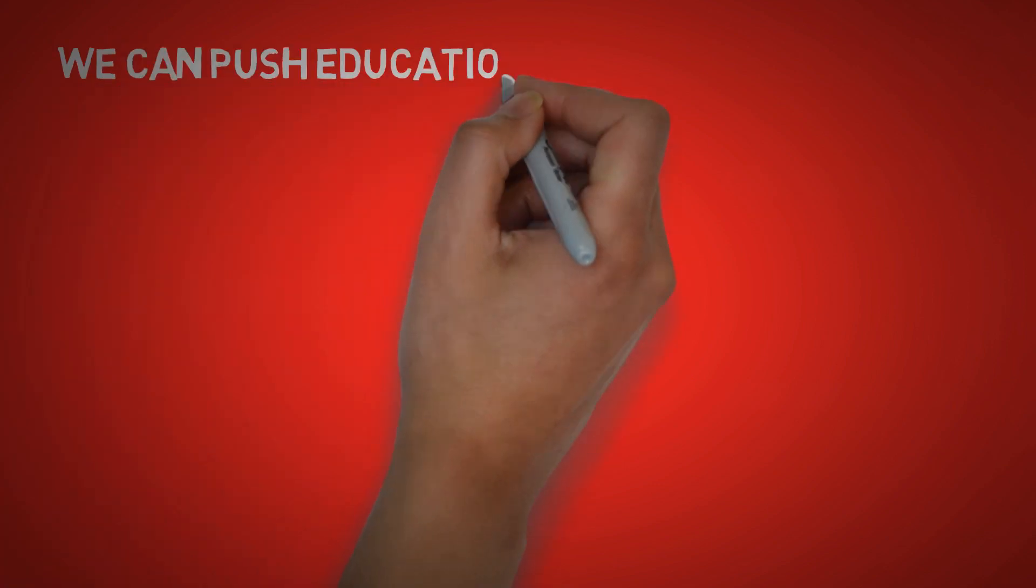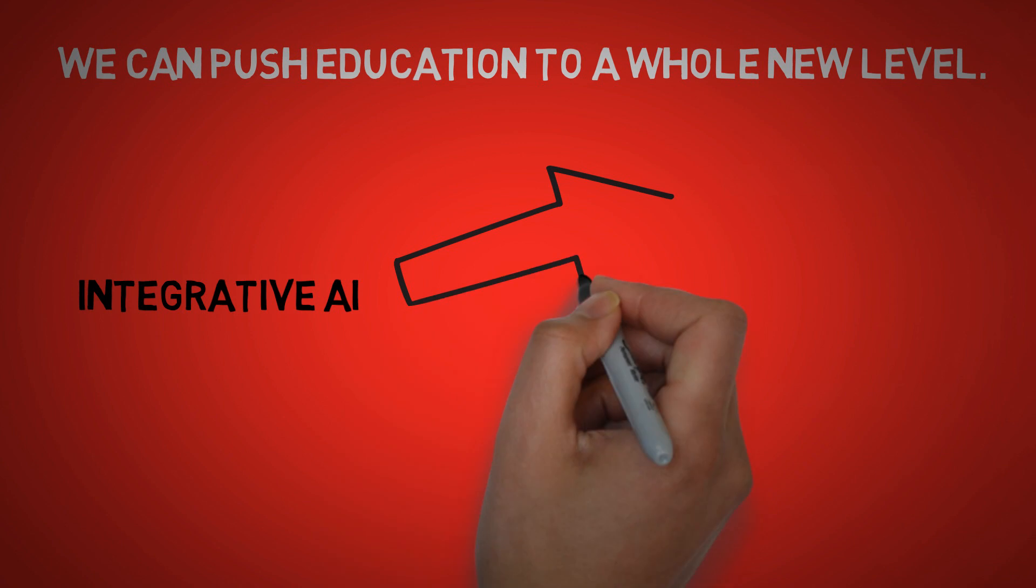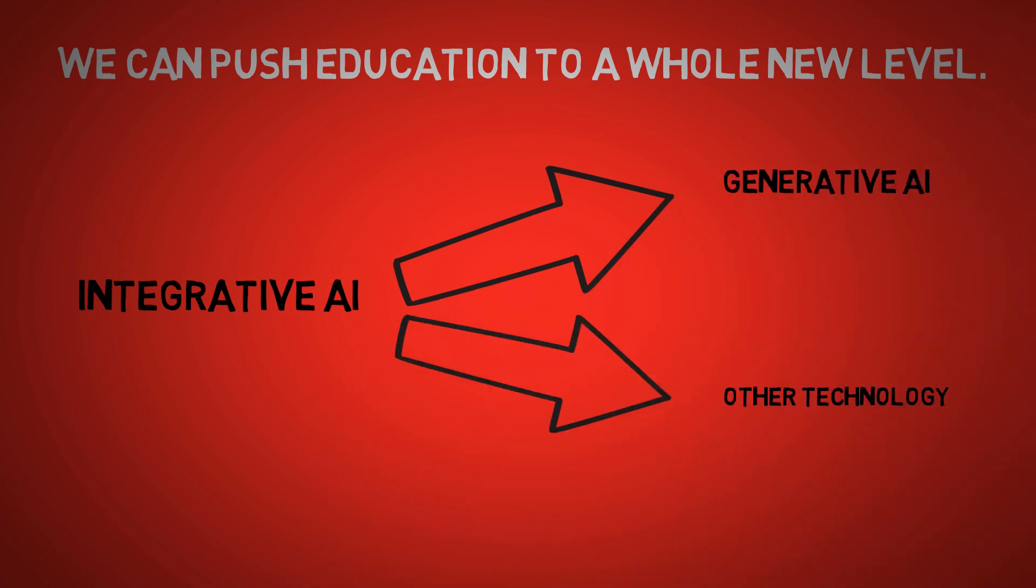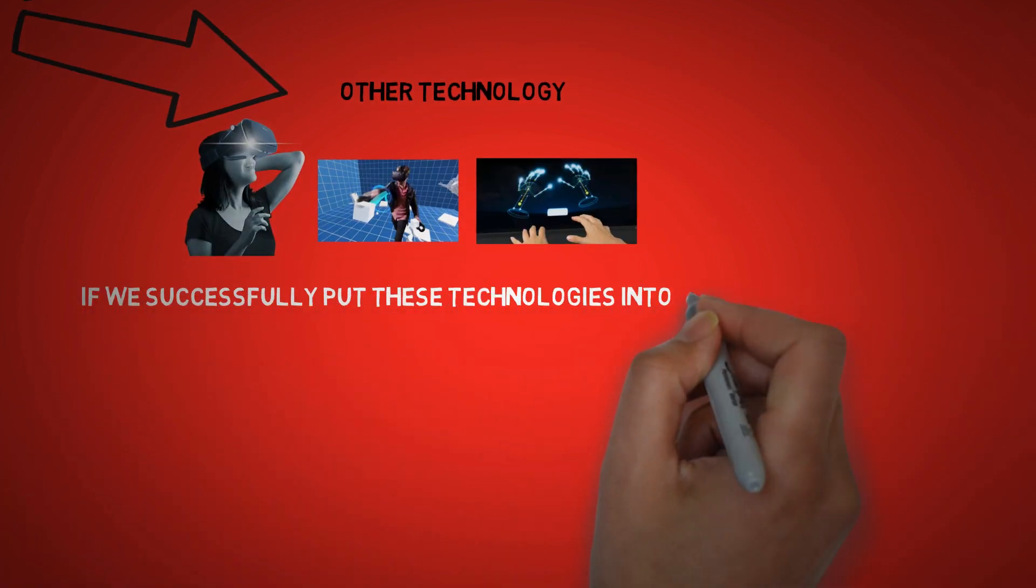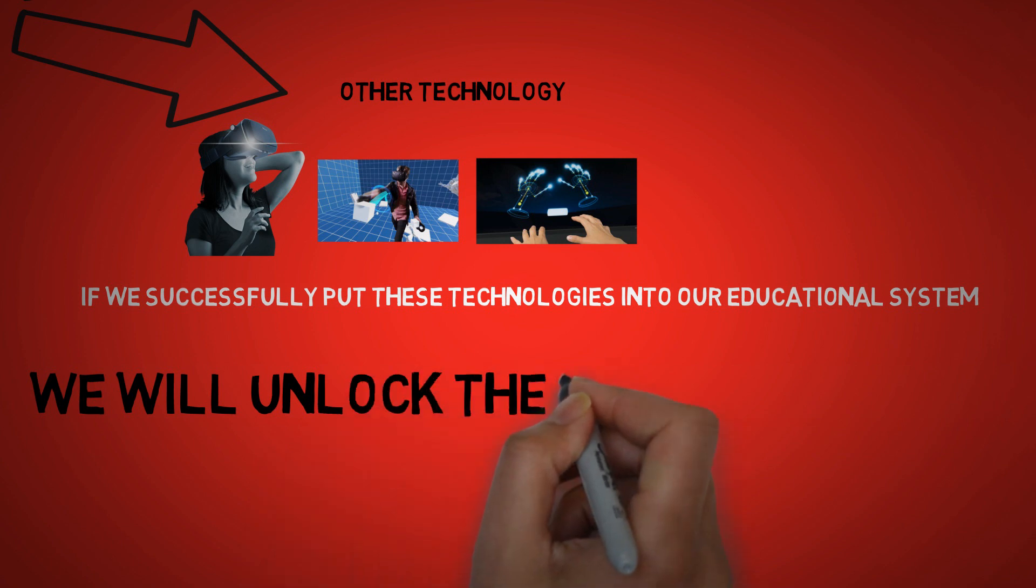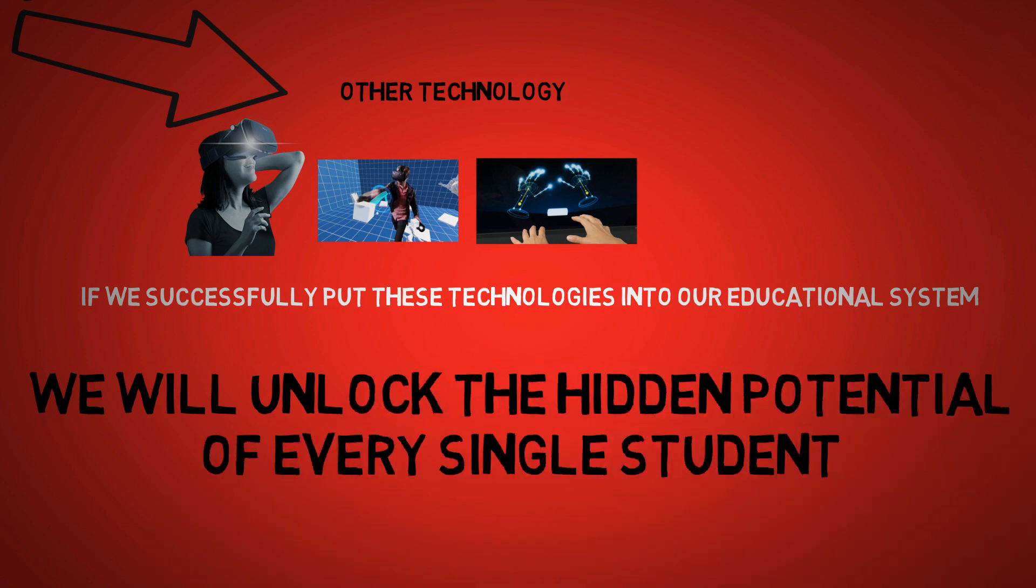We can push education to a whole new level. At the risk of oversimplifying, integrative AI is the mix of generative AI with other technologies such as virtual reality, simulated world or gesture recognition. If we successfully put these technologies into our educational system, then we will unlock the hidden potential of every single student.